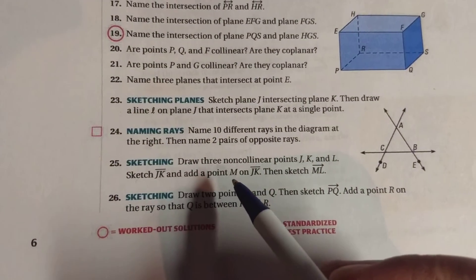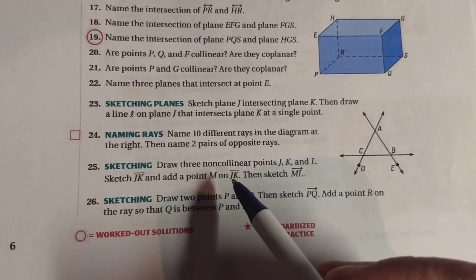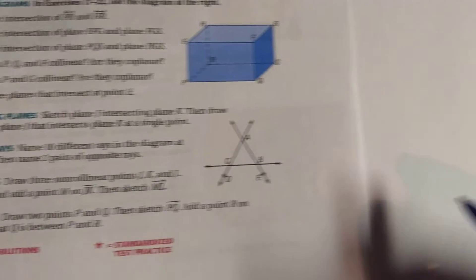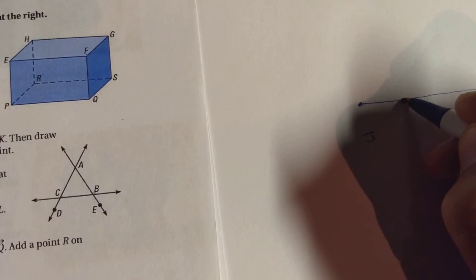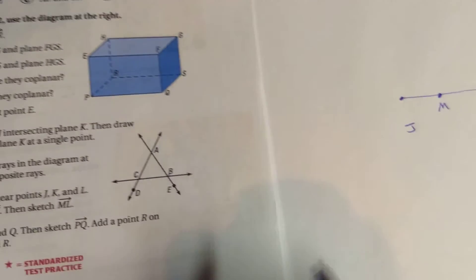And we're going to add point M on line segment JK. So here's point M. It could be anywhere on here. It doesn't say that it's got to be in the middle. There's point M.